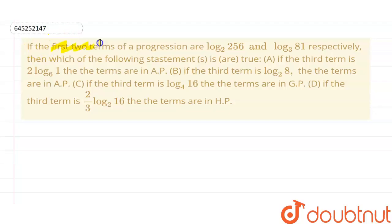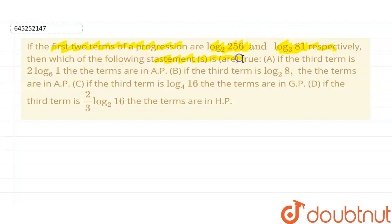The given question is: if the first two terms of a progression are log base 2 of 256 and log base 3 of 81 respectively, then which of the following statements are true? Let's look at the solution.